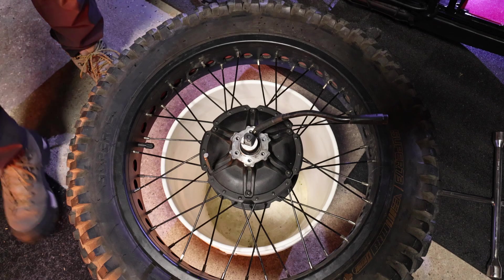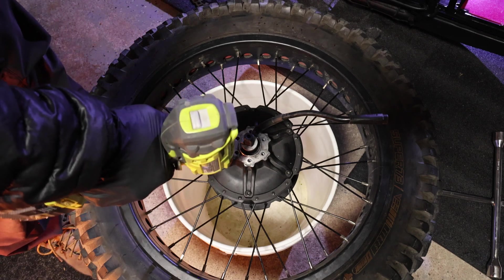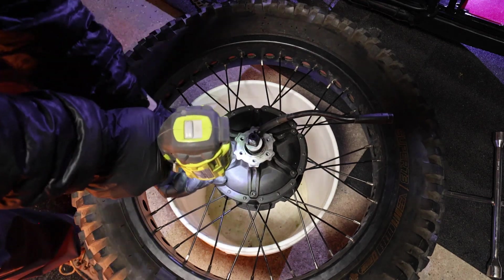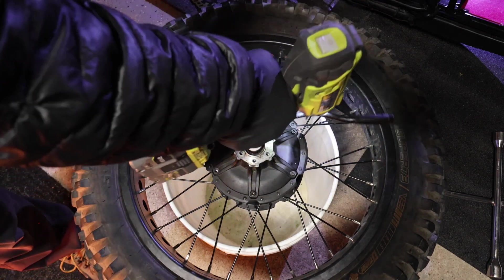I'm just removing the disc brake and there are six four millimeter Allen bolts that are holding the hub into the housing, so I just removed those.